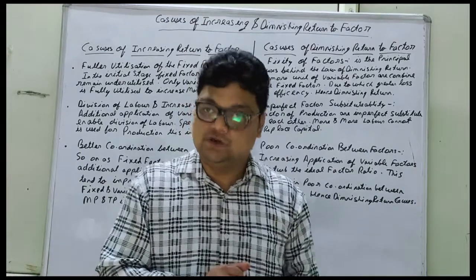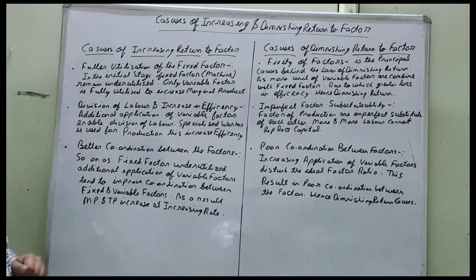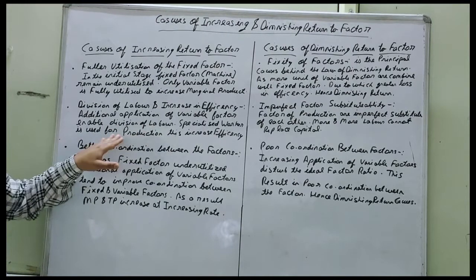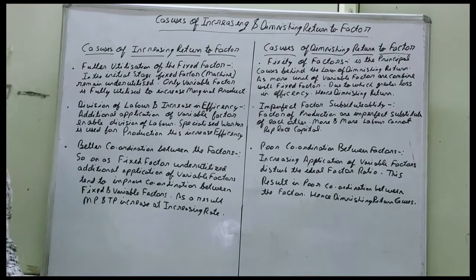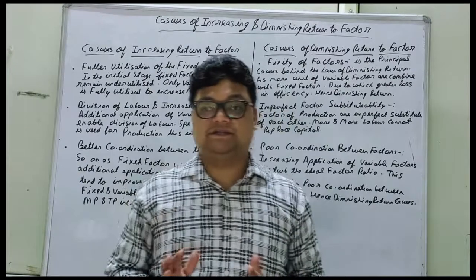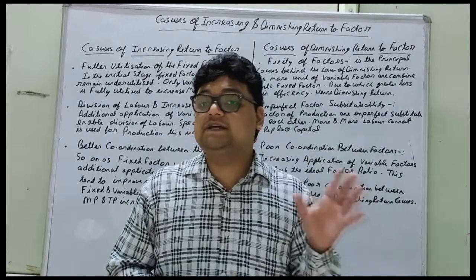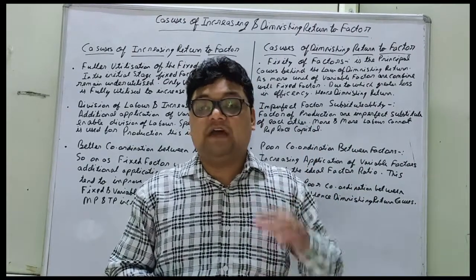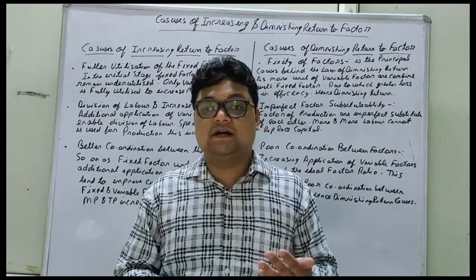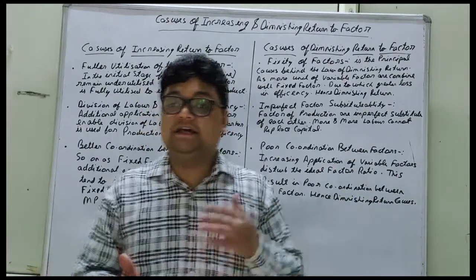The second cause is division of labor and increase in efficiency. Division of labor means when a particular work is divided among the laborers so that there is no burden on any particular laborer. Due to division of labor, efficiency is also increased. Efficiency means the speed of the worker — they must complete their work in a particular time. So due to division of labor, their efficiency also increases.